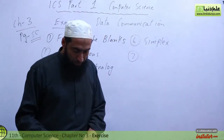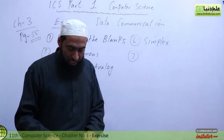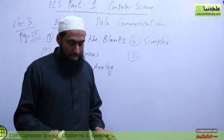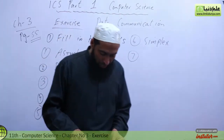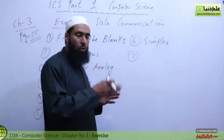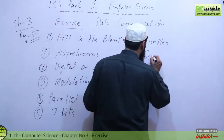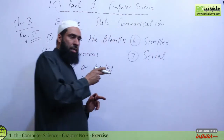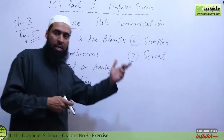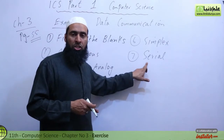Number 7: In blank transmission, data is transmitted character by character. The answer is serial. Serial data transmission is where one character is transmitted at a time, character by character.